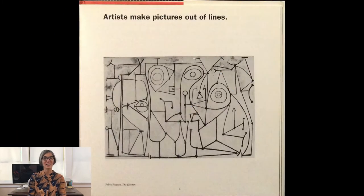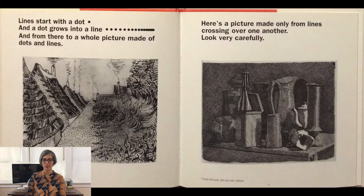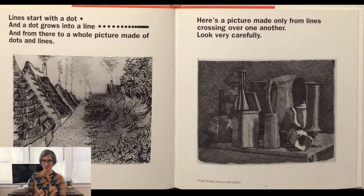Artists make pictures out of lines. Lines start with a dot, and a dot grows into a line, and from there to a whole picture made of dots and lines. Here's a picture made only from lines crossing over one another. Look very carefully.